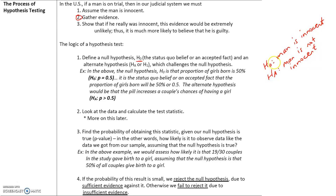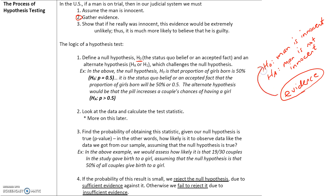In the trial, the prosecution states that if the null hypothesis were true — if the man is in fact innocent — then this evidence would be very unlikely. We wouldn't observe this evidence if the null hypothesis were true. So because this evidence is being observed, which counters the fact that the man is innocent, the null hypothesis must be false.